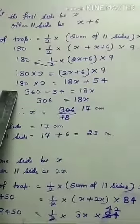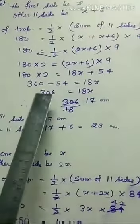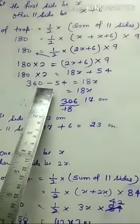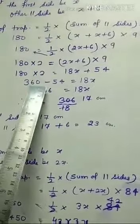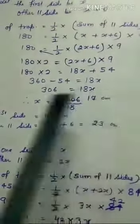So 360, and the plus sign changes to minus when moved to the other side. 360 minus 54 equals 18x.